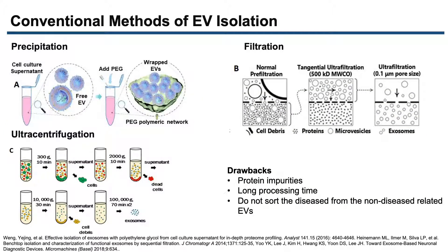In order to analyze EV cargo, EVs of interest must be isolated in high purity and high yields from body fluids. There are different conventional EV isolation methods. Hydrophilic polymers such as polyethylene glycol reduce the solubility by lowering the hydration of EVs and lead to precipitation, but the isolate can contain protein impurities and affect downstream processing.